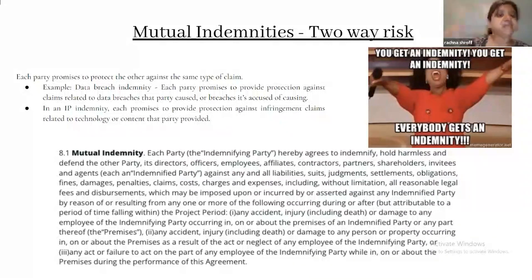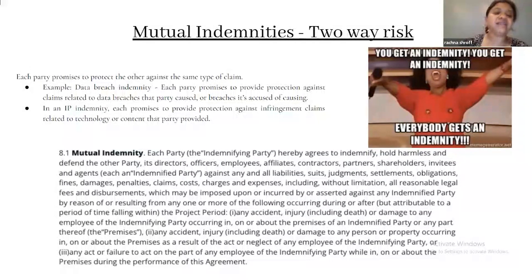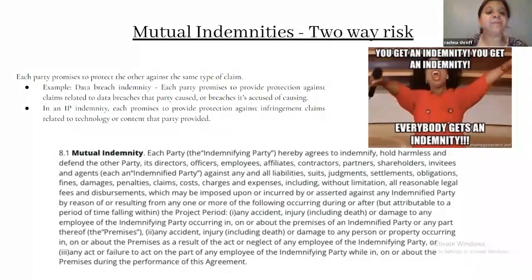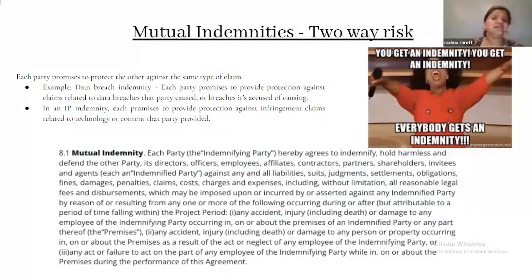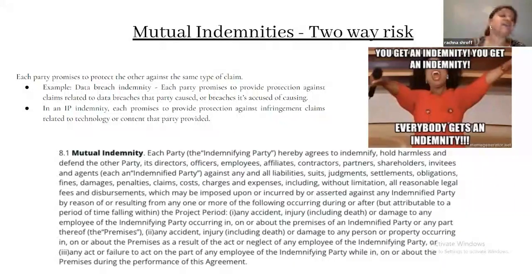Each party promises to protect the other against the same type of claim. For example, in a data breach indemnity, each party promises to provide protection against claims related to data breaches that party caused or is accused of causing. In an IP indemnity, each party promises to provide protection against infringement claims related to the technology or content that party provided. So in both data breach and IP cases, both sides have to provide indemnity — that is a very smart way of providing indemnity under technology contracts.